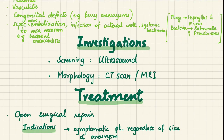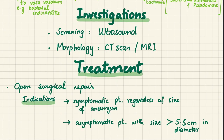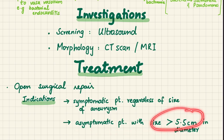For investigation, ultrasound is used for screening purposes, while CT scan or MRI are needed for detailed morphological assessment. Regarding treatment, open surgical repair should ideally be preventive, since surgery after complications — especially rupture — is not very beneficial. Indications for surgery are: symptomatic patients regardless of aneurysm size, and asymptomatic patients with an aneurysm greater than 5.5 cm in diameter.